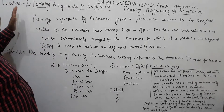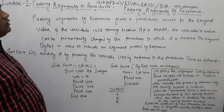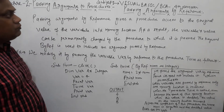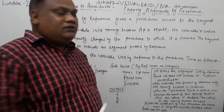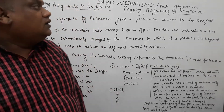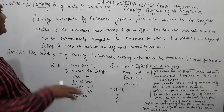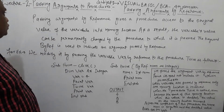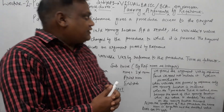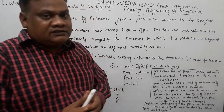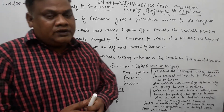So, this is lecture 2, and our topic is Passing Argument to a Procedure — specifically, Passing Argument by Reference. In lecture 1, we discussed passing arguments by value. Today in lecture 2, we will discuss how we pass the argument by reference in Visual Basic.